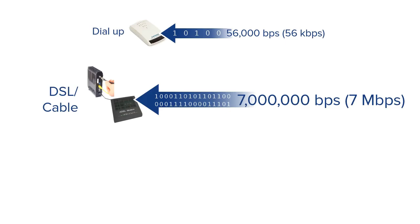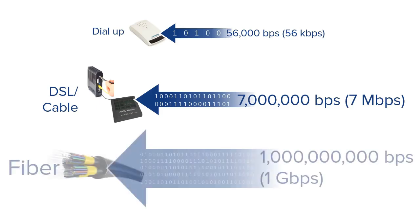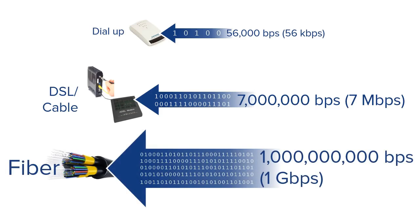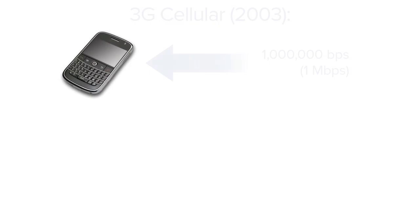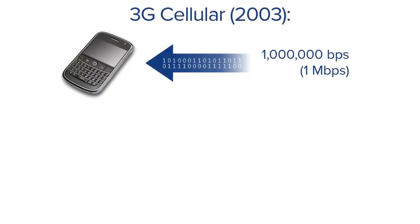Fiber internet, which has just recently been introduced to some markets in the United States in about the last five years, is very fast — one billion bits per second, or one gigabit. That is one billion ones or zeros transmitted every single second, or over 100 times as fast as your DSL or cable. I'd say that is definitely broadband.